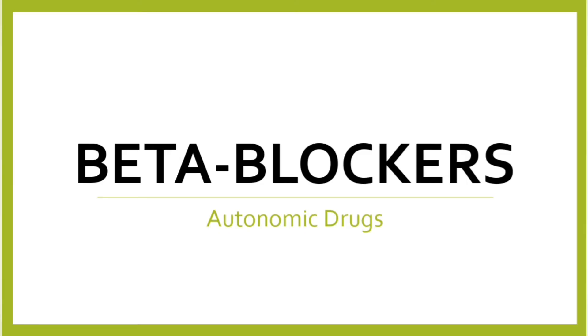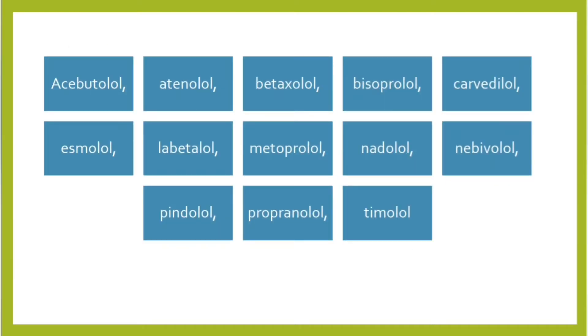Let's talk about beta blockers. Beta blockers are preparations which bind to beta adrenoreceptors and prevent their stimulation by norepinephrine. Here is a list of some beta blocker drugs in alphabetical order: acebutolol, atenolol, betaxolol, bisoprolol, carvedilol, esmolol, labetalol, metoprolol, nadolol, nebivolol, penbutolol, propranolol, timolol.